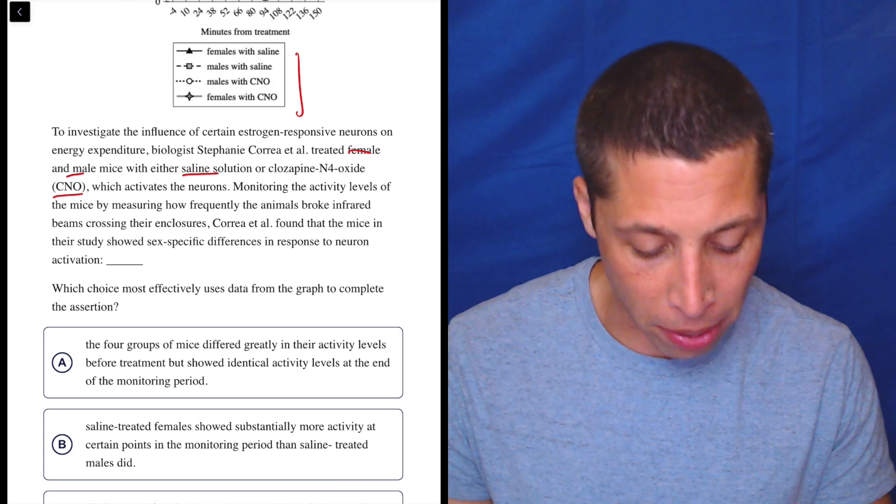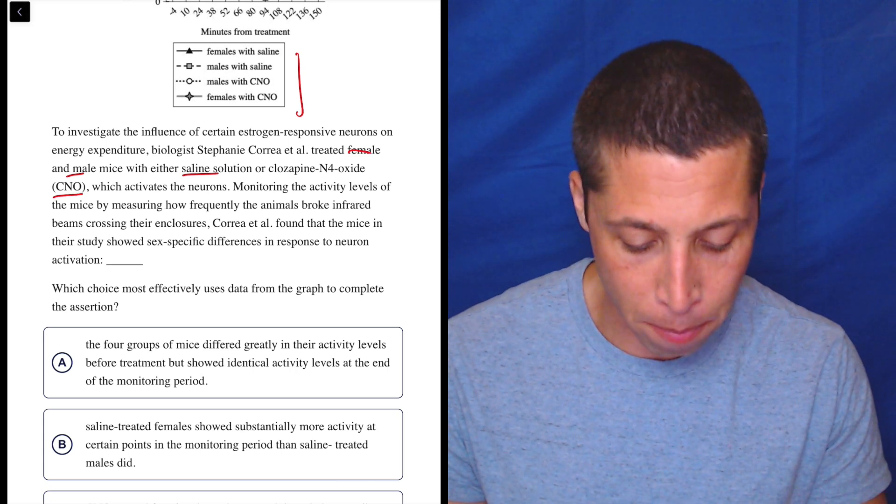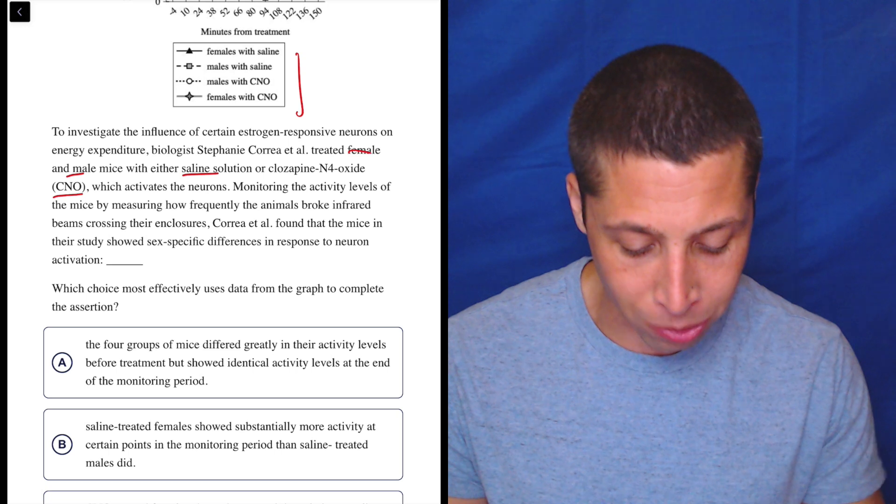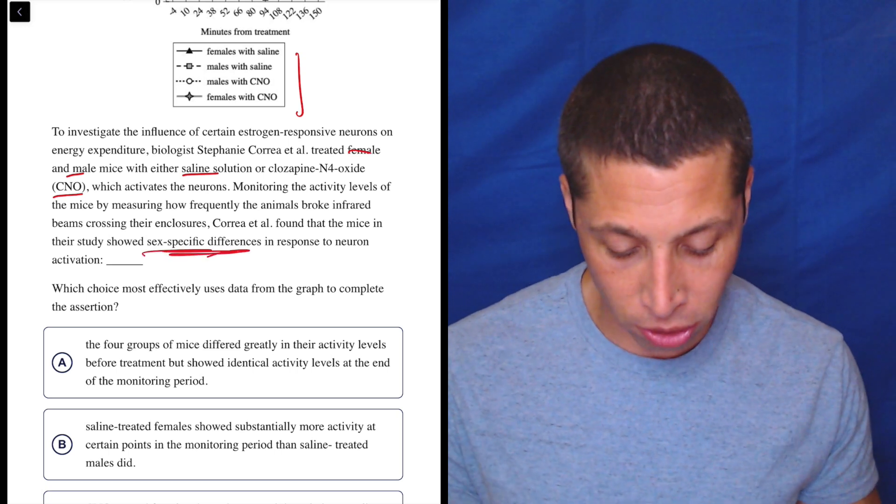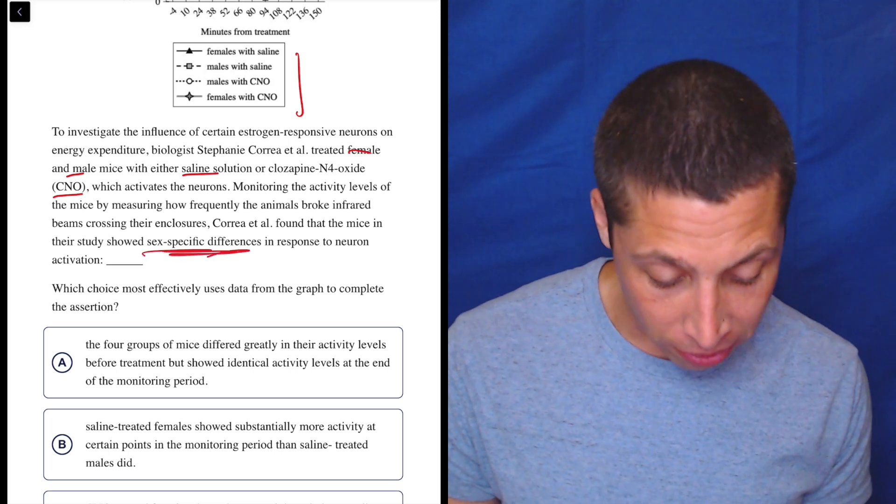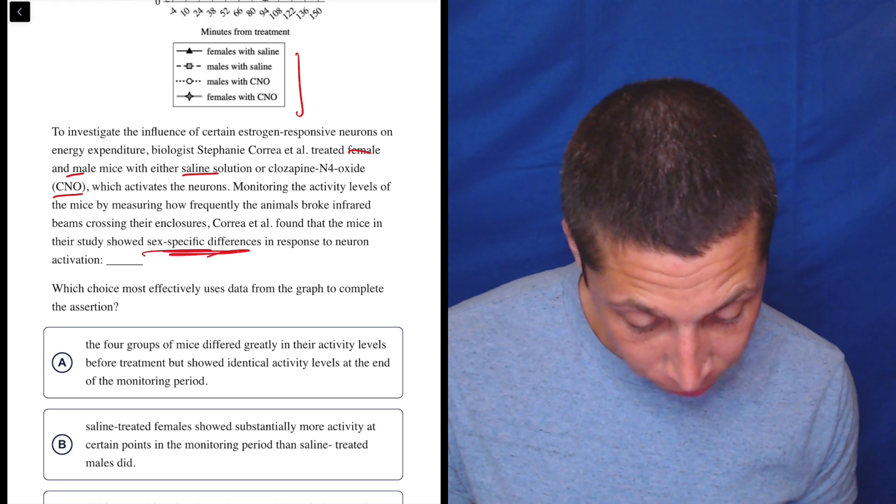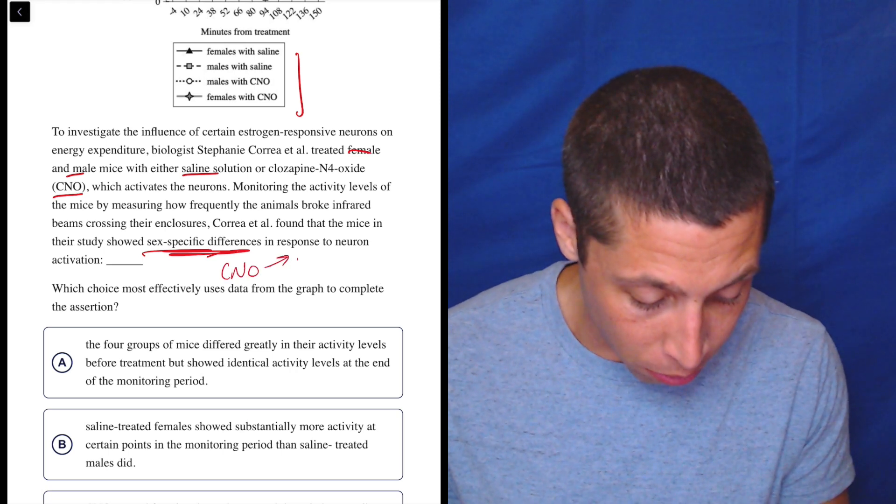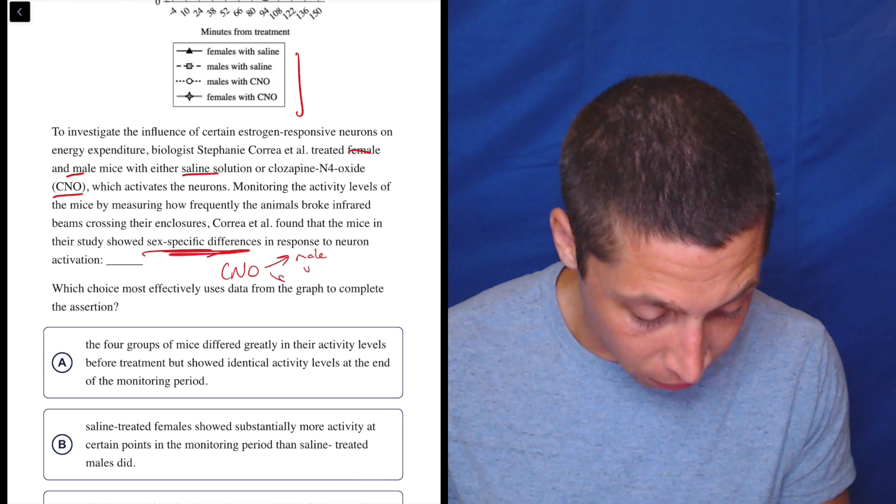Monitoring the activity levels of the mice by measuring how frequently the animals broke infrared beams crossing their enclosures, Correa et al. found that the mice in their study showed sex specific differences in response to neuron activation, so the CNO. So CNO is going to lead to male versus female differences.